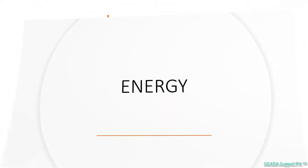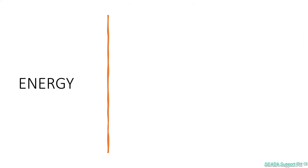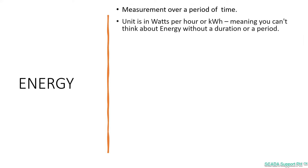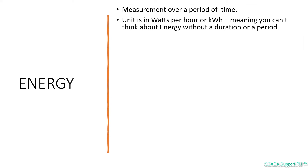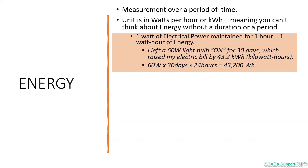Moving on with energy — when we talk about electrical energy, it is a measurement over a period of time. The unit is in watt hours or kilowatt hours, meaning you can't think about energy without a duration or a period. Hence, one watt of electrical power maintained for an hour is equal to one watt hour of energy.